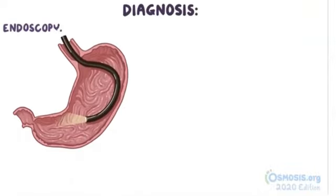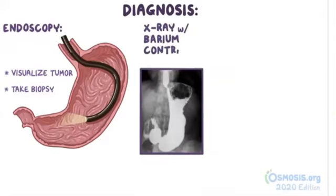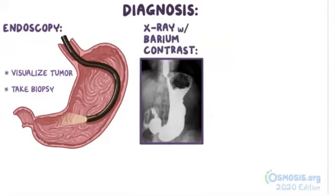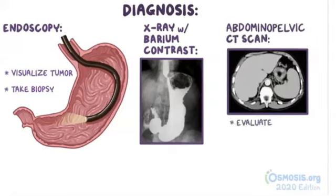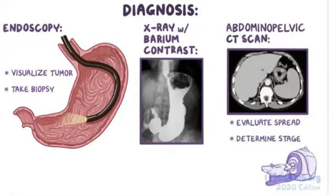Diagnosis of gastric cancer is essentially made with endoscopy, which is when a tube with a camera at the end of it is placed into the stomach to directly visualize the tumor and take a biopsy. X-rays with barium contrast of the upper GI tract can be useful to identify complications like ulcers. And finally, abdominal-pelvic CT can be used to evaluate if the cancer has spread to nearby organs or lymph nodes in order to determine the stage of the tumor.